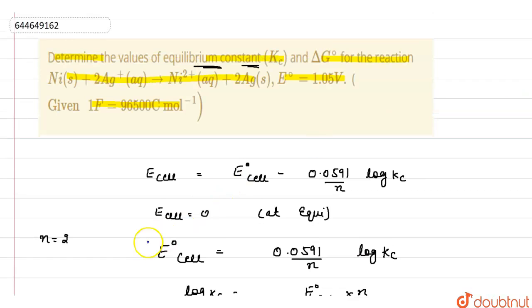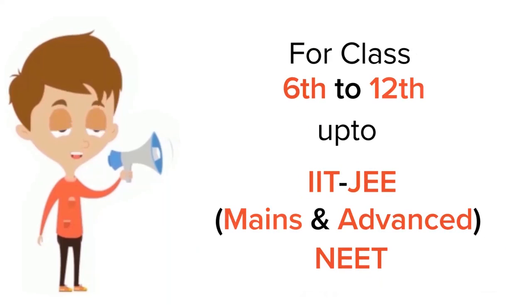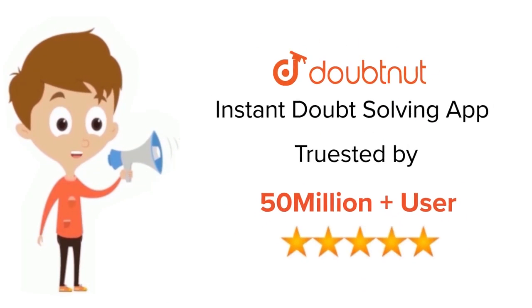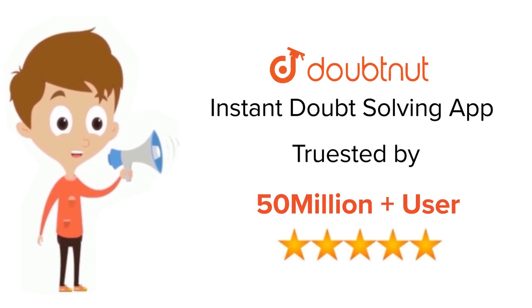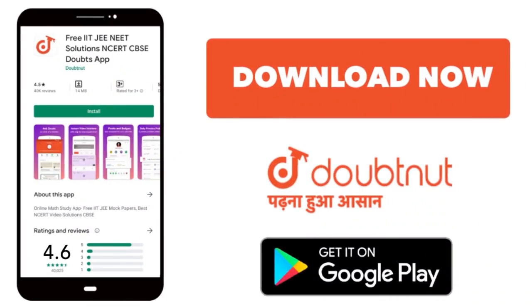So the values of delta G is minus 202.65 kilojoules and Kc is 3.92 into 10 raised to power 35. I hope you understand this question. Thank you very much. For class 6 to 12, IIT JEE and NEET level, trusted by more than 5 crore students — download the DoubtNet app today.